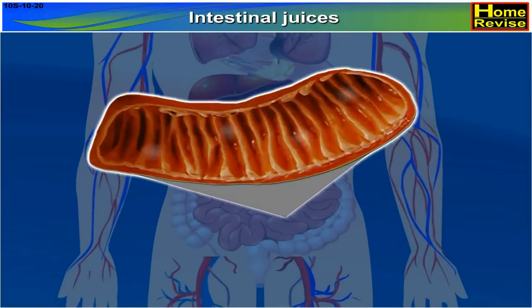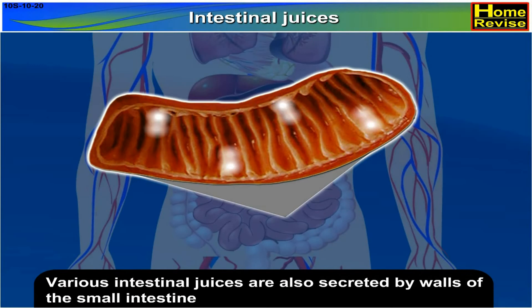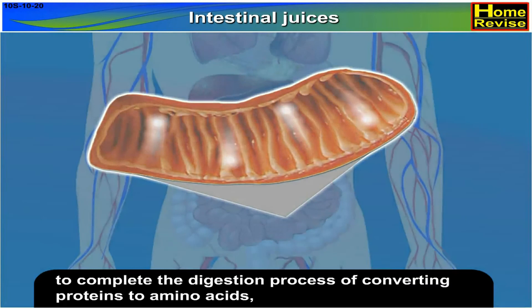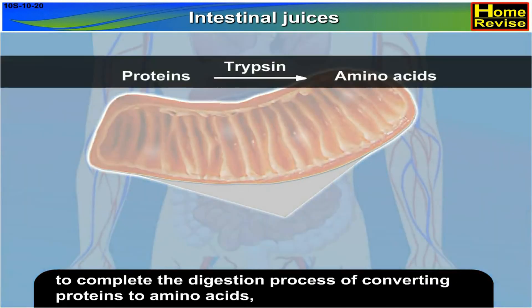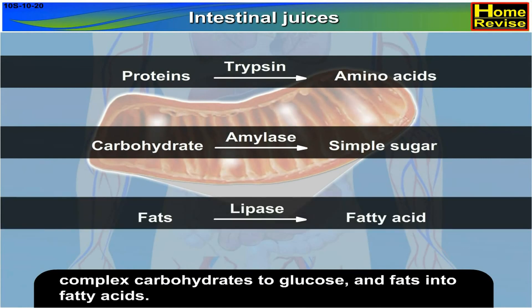Various intestinal juices are also secreted by the walls of the small intestine to complete the digestion process, converting proteins to amino acids, complex carbohydrates to glucose, and fats into fatty acids.